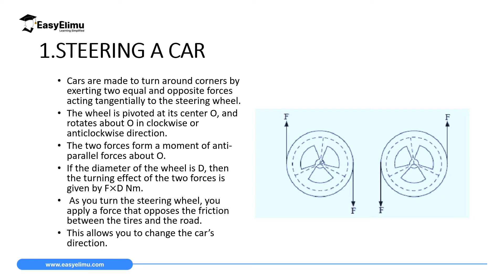The first application of a couple is in the steering wheel of a car. Cars are made to turn around corners by exerting two equal and opposite forces on the steering wheel. If you are handling a steering wheel and you want to turn to the left, you move your hands so that one force is created upward and another force is created downward. In this case the steering wheel will turn in a clockwise direction.